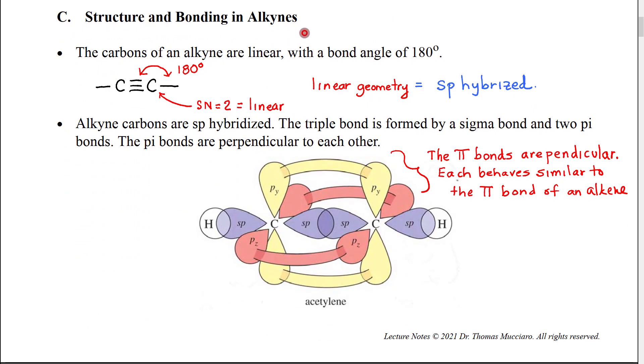A quick review of the structure and bonding in alkynes. If we look at the carbons of an alkyne, we can see that they should have a steric number of two,